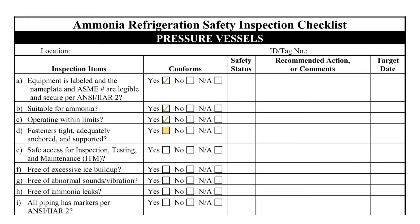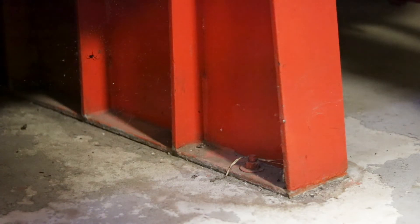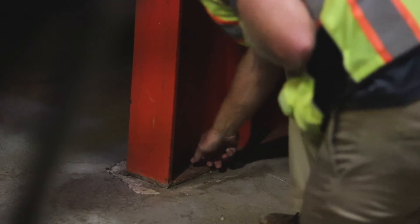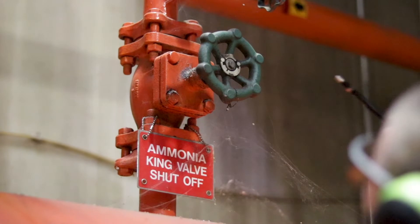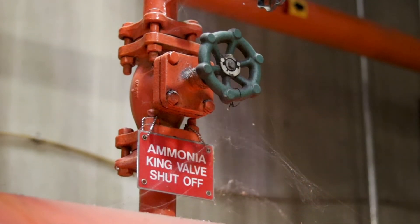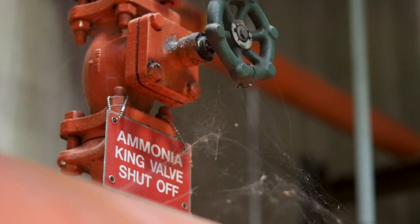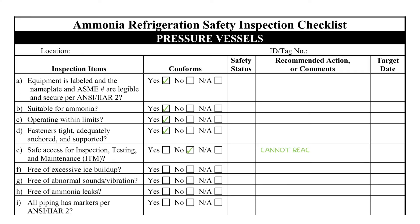Item D requires the inspector to verify that supports and anchorage are adequate. For a ground-mounted pressure vessel, the anchorage should be inspected to ensure nuts are tight and free from corrosion. IIAR 6 has a separate piping checklist, so the focus of this question is not on pipe supports. The vessel should have safe access for normal service and maintenance. While this vessel is ground-mounted, the king valve cannot be accessed without a ladder, so the access is inadequate and must be improved. It should be noted that the requirement for permanent access to manual valves applies specifically to valves involved in the system emergency shutdown procedure, like this king valve.